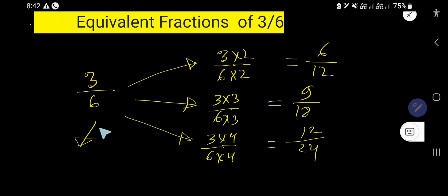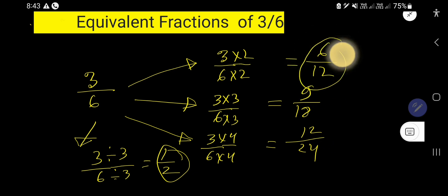You can also find the equivalent fraction by dividing both numerator and denominator by the same number. So divide numerator by 3, denominator by 3, so you are getting here 1 over 2, so 1/2.